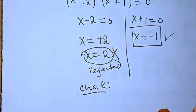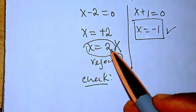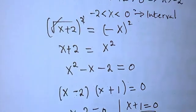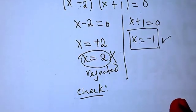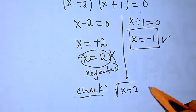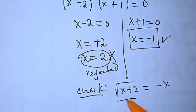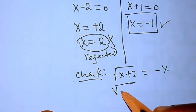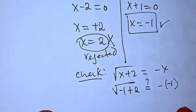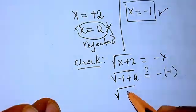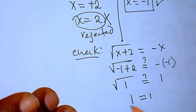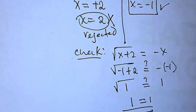We can still verify: substituting x equals minus 1 into the original equation, we get root of minus 1 plus 2 equals minus times minus 1, which is root of 1 equals 1. The square root of 1 is 1, and 1 equals 1. So x equals minus 1 is confirmed as the real solution.